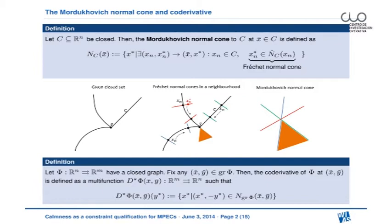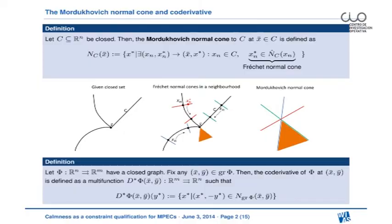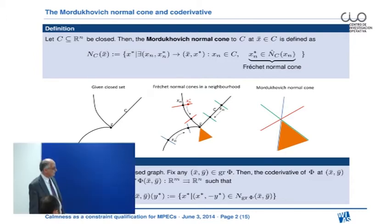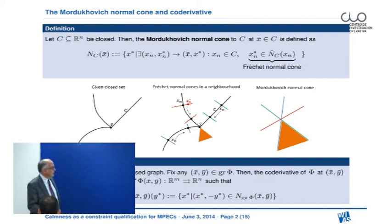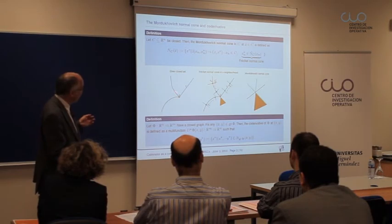Before going into the details of the talk, I have to recall a few basic concepts which most of you might be familiar with. The first one is the Mordukhovich normal cone and co-derivative to closed sets or set-valued mappings. The formal definition of this normal cone is written down here, but maybe it's easier to illustrate it for a picture where we are given a closed set C with these three strata and we want to calculate this normal cone at an element x-bar belonging to the set C.